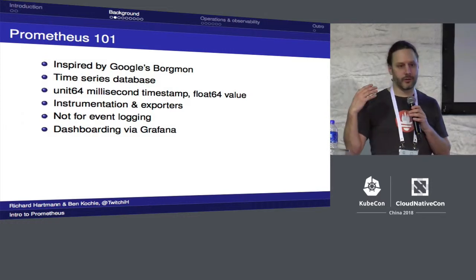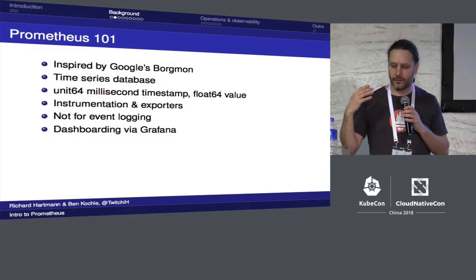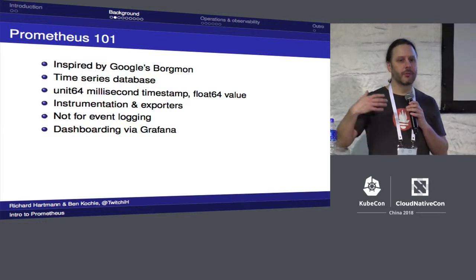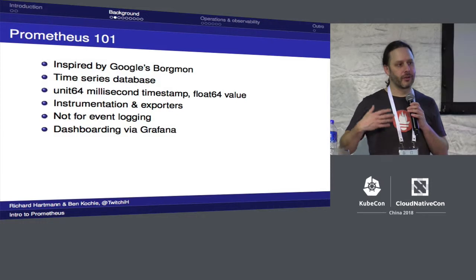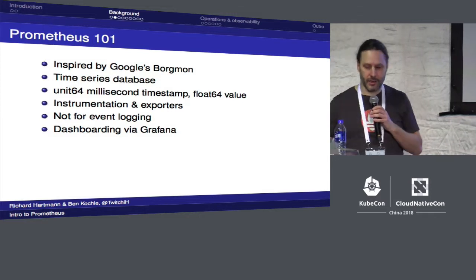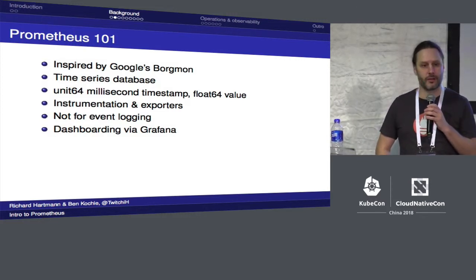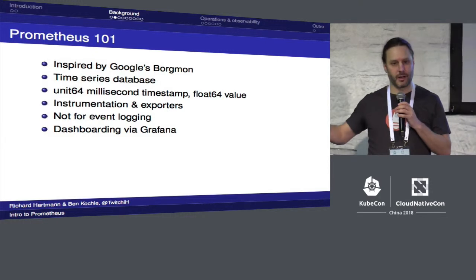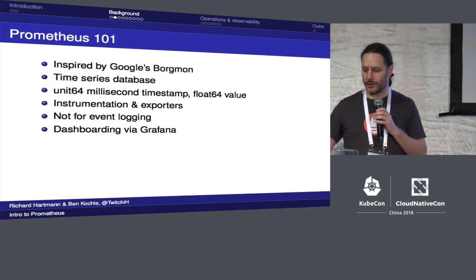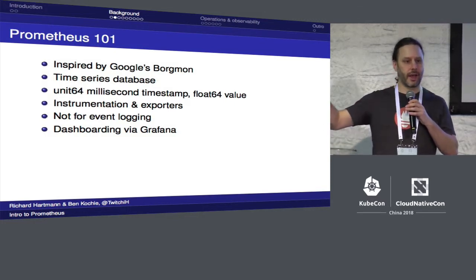Prometheus is different from something like Nagios. It started with a time series database and uses that as its core. It's very simple — it uses only numeric metrics. It started with instrumentation: the first thing developed was an instrumentation library so they could start producing data for monitoring. It's not an event logging system, not a replacement for Elasticsearch or Splunk. We consider that a separate system.